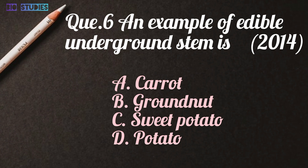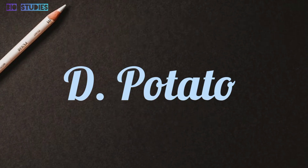Next question: An example of an edible underground stem is — carrot, groundnut, sweet potato, or potato. And the right answer is D: potato.